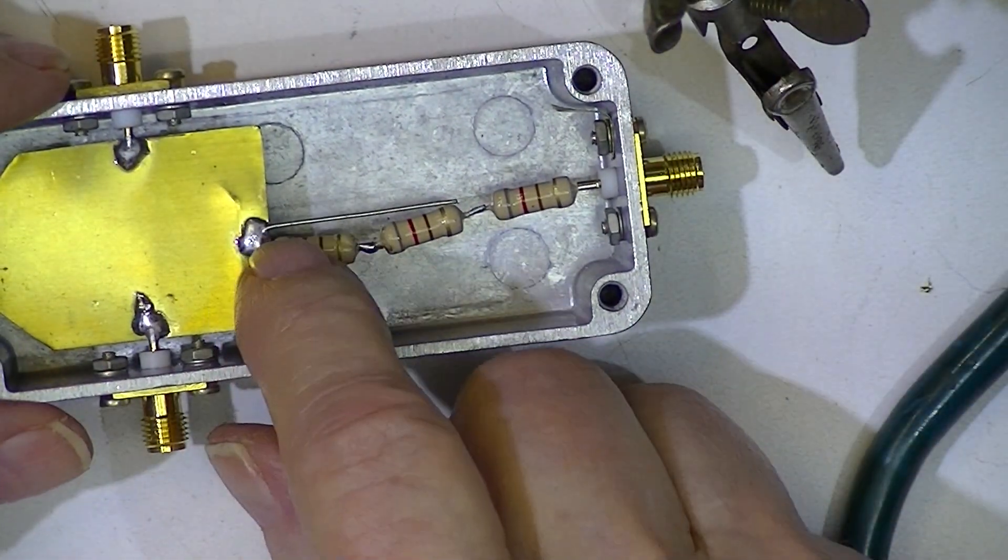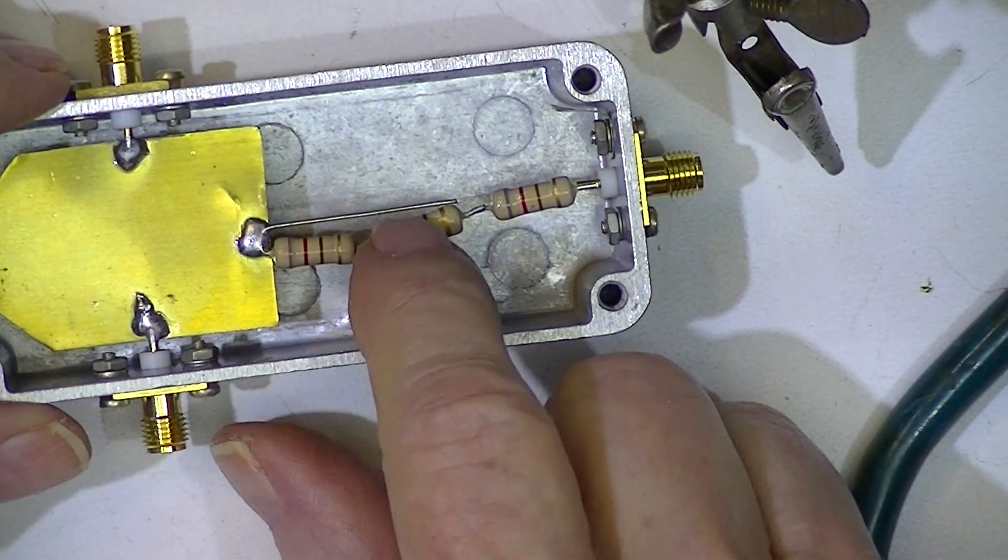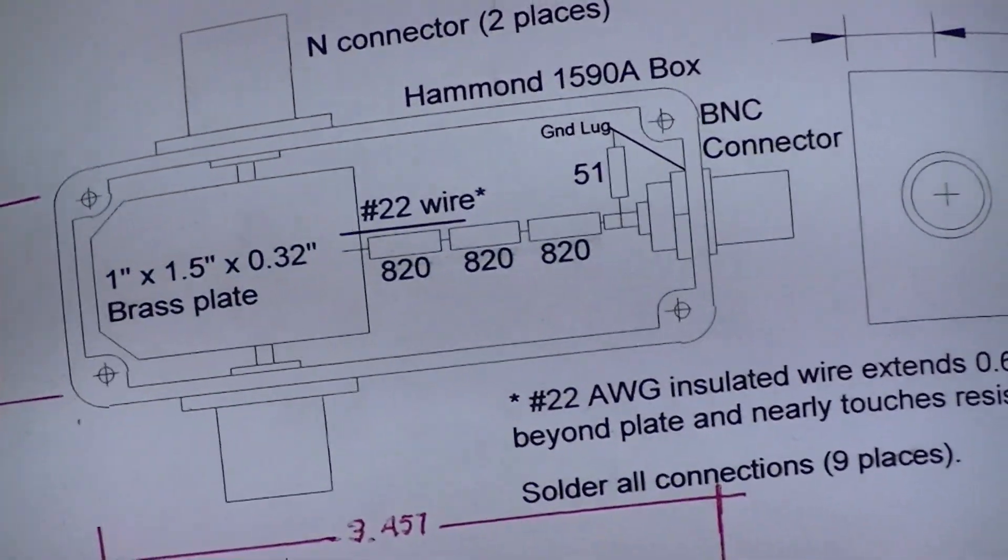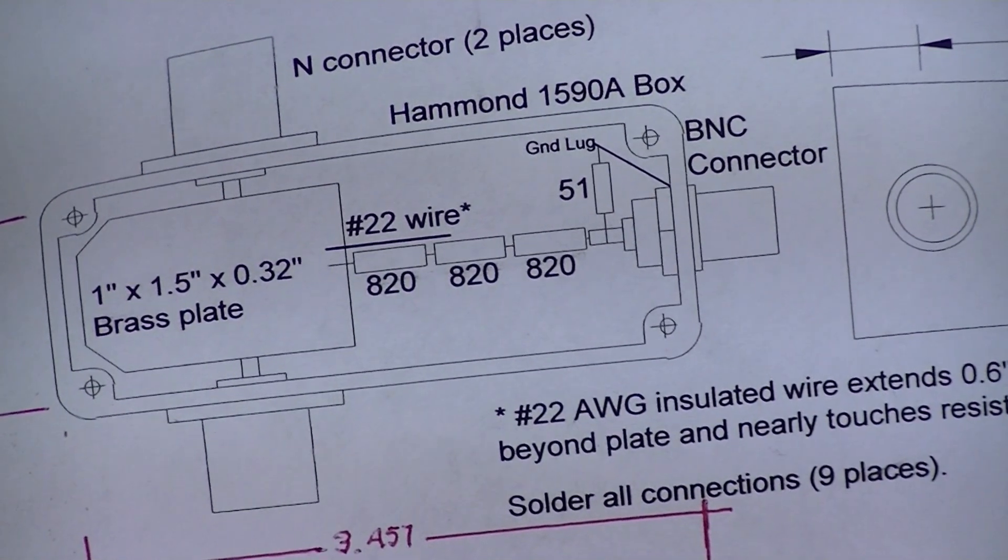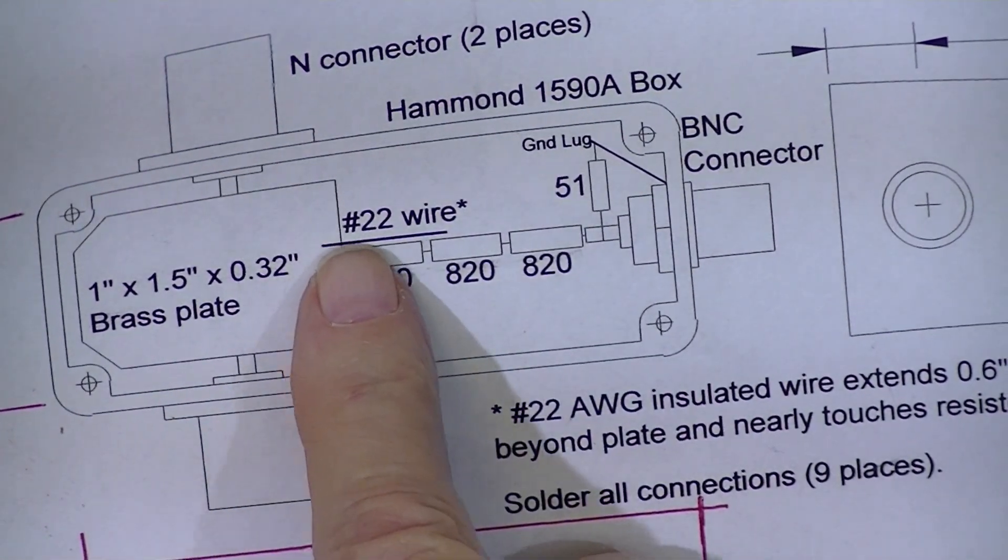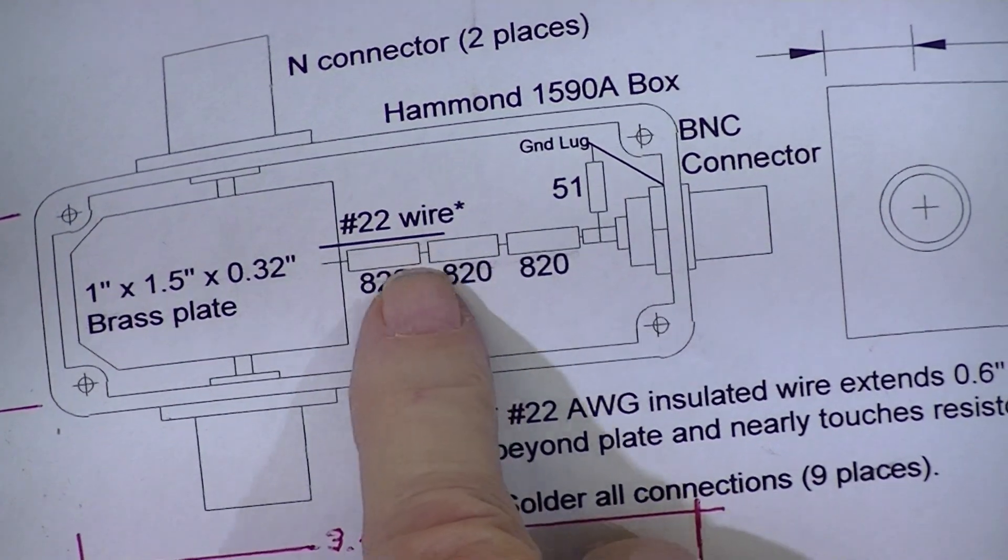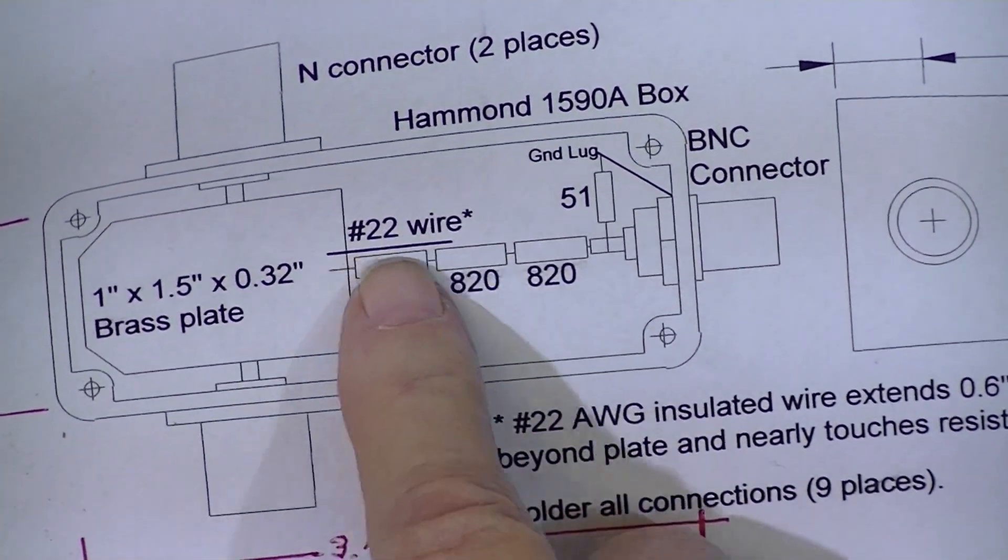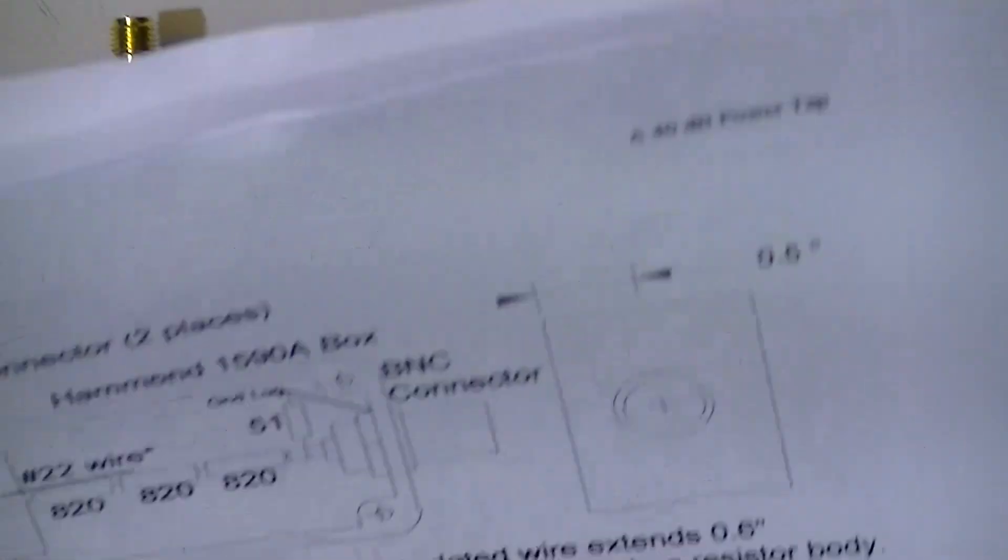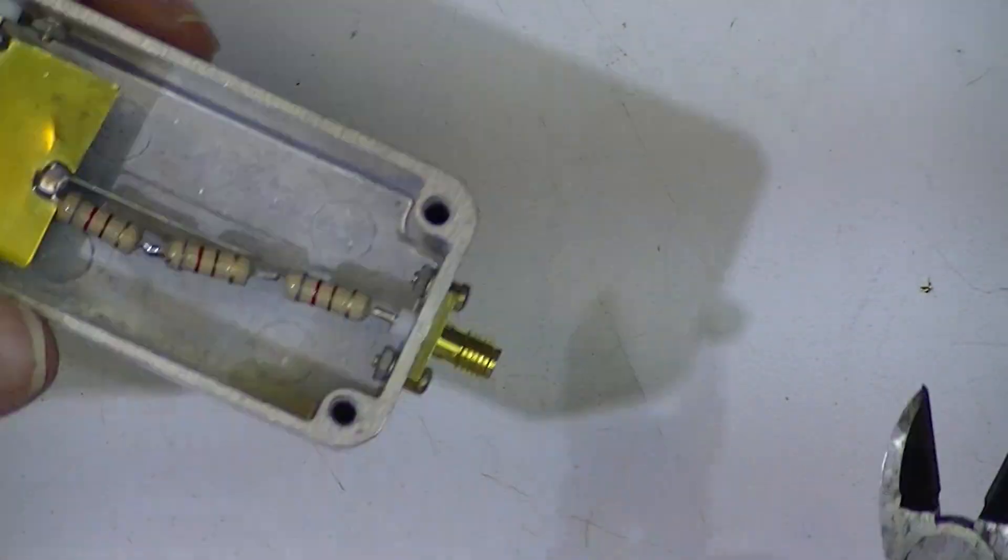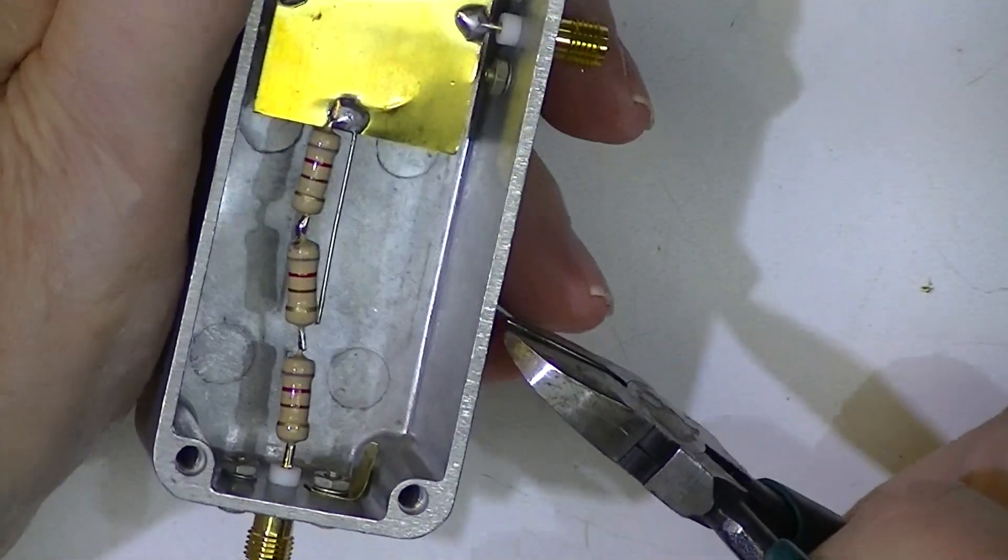Now this leg of the resistor that's sticking down here is going to be my capacitor. And the design from Hayward and Larkin shows a number 22 wire sticking down about a third of the way down the second resistor. So I'll trim it.